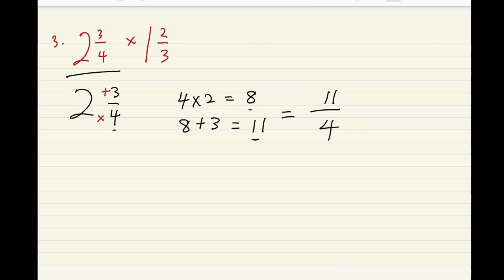We're gonna do the same to the second one, which is 1 whole 2 over 3. Multiply and then add: 3 times 1, which is 3, and 3 plus 2, which is 5. This is all we need to put on top of the fraction.